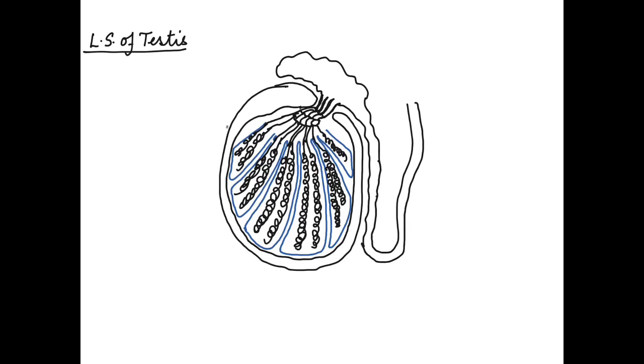The outermost layer that is there is called the tunica albuginea. This is the outer protective covering of the testes. Next to that is another layer called tunica vaginalis. These two layers form the covering of the testes.